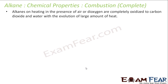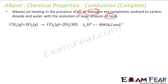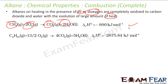When you heat alkanes in the presence of oxygen or air completely, it gives a large amount of heat. For example, petrol — they are hydrocarbons. When you heat them, they give energy. For example, methane is an alkane; you heat it in the presence of oxygen, you get carbon dioxide and water, and 890 kilojoules per mole of energy.